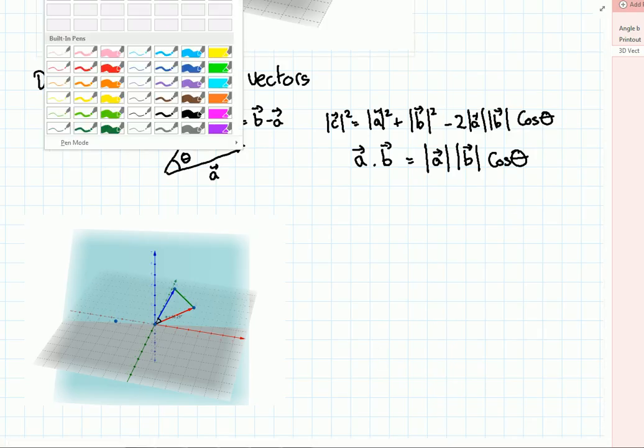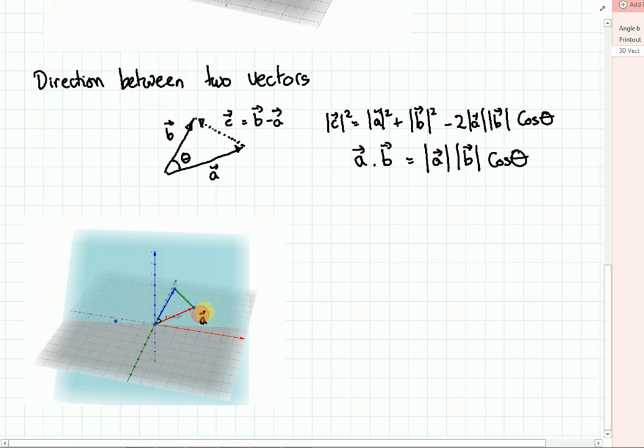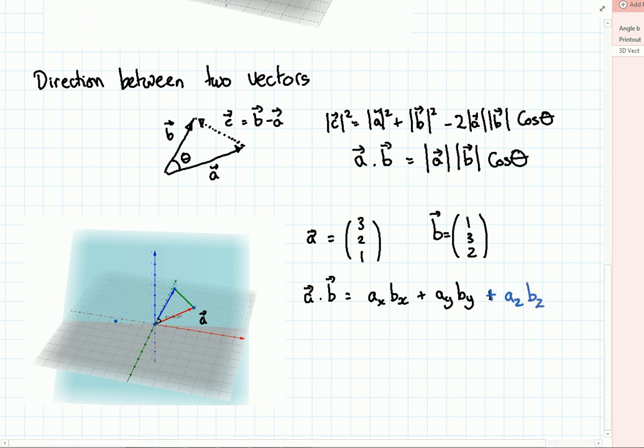So my two vectors were vector a, the 3, 2, 1 again. And vector b was a 1, 3, 2 vector. To find the angle between them, we need to do the dot product. So a dot b is a_x b_x plus a_y b_y. And then we need our third part, which is the z direction. We add on a_z b_z. So my sum, I actually get the sum. 3 times 1, then 2 times 3, and finally 1 times 2. So my dot product is going to be 3, 9 and 11.